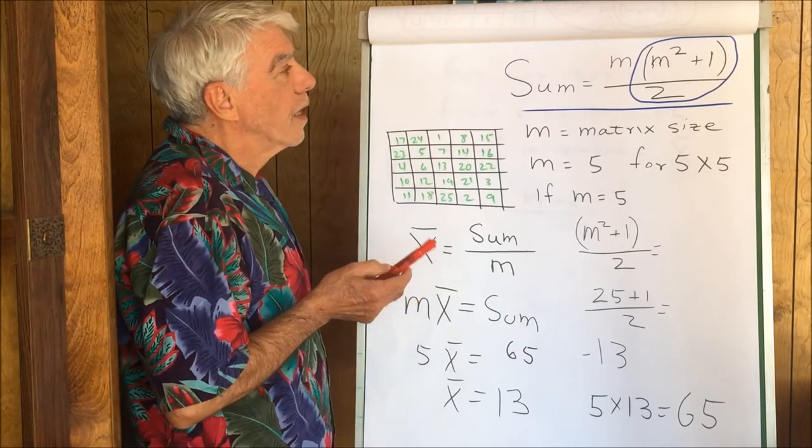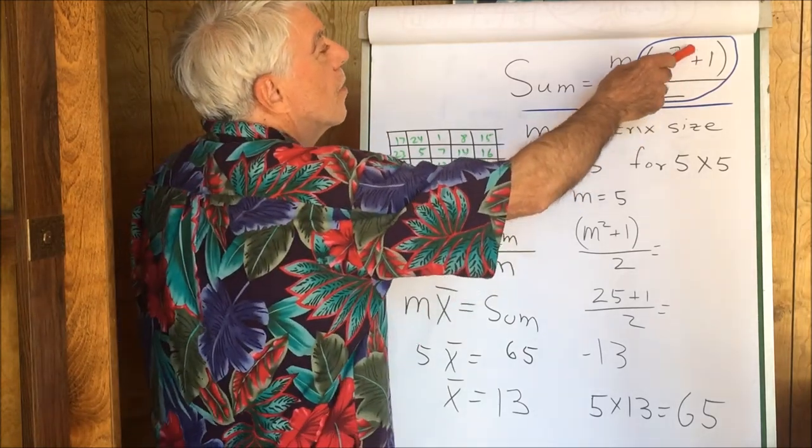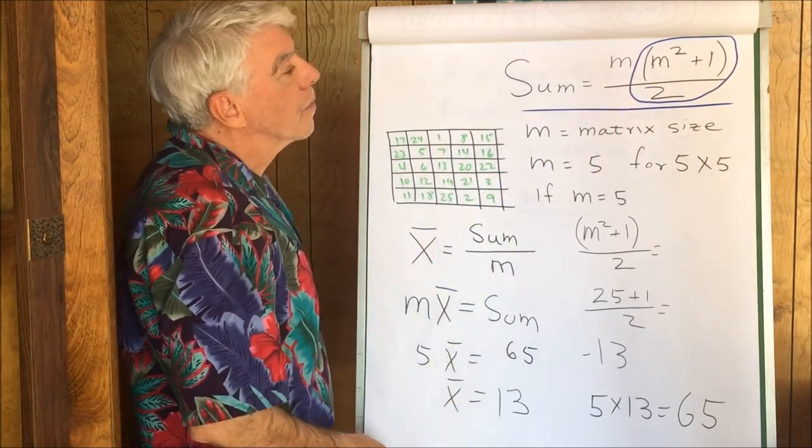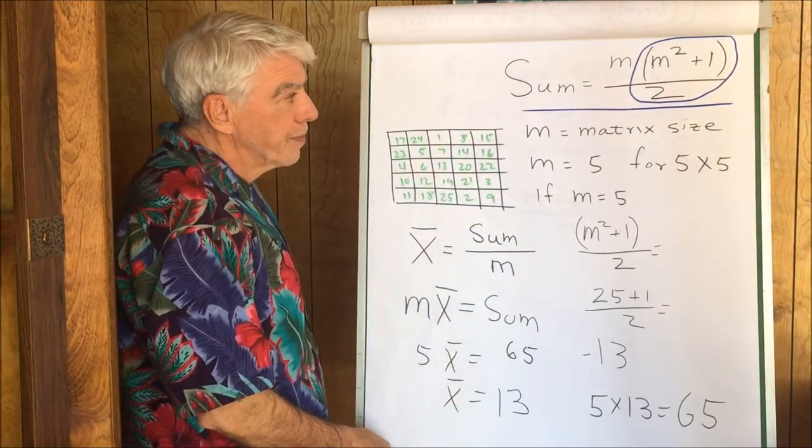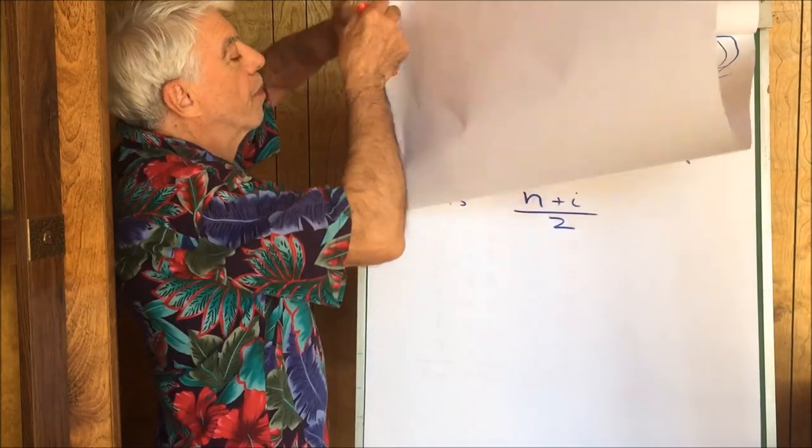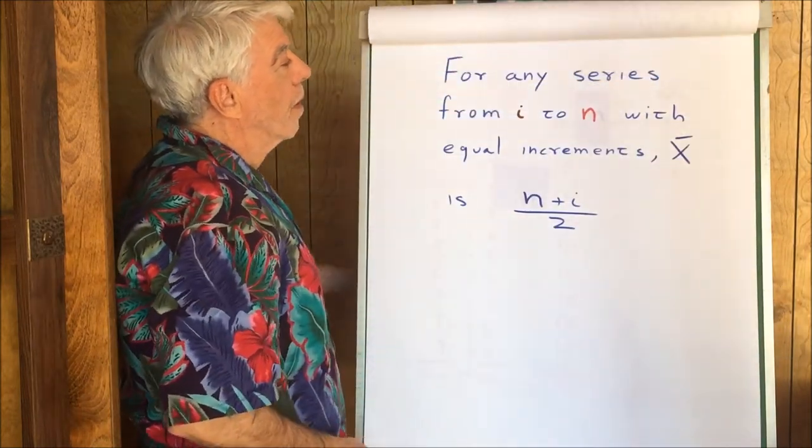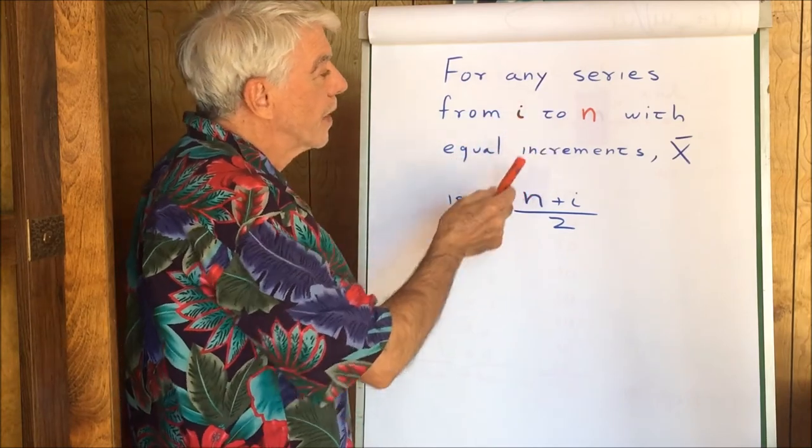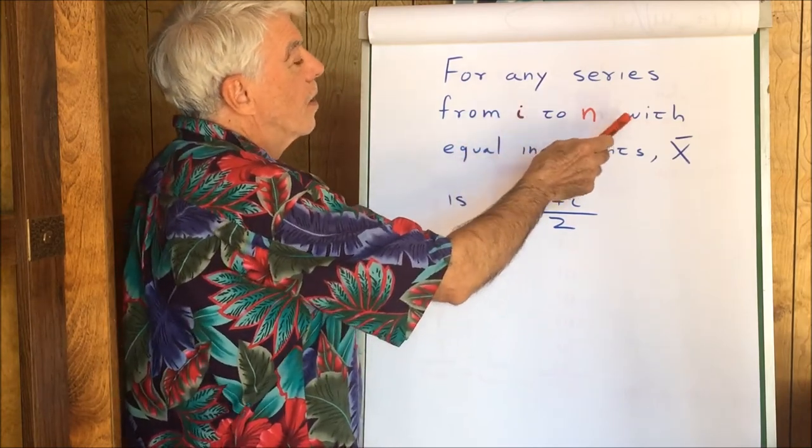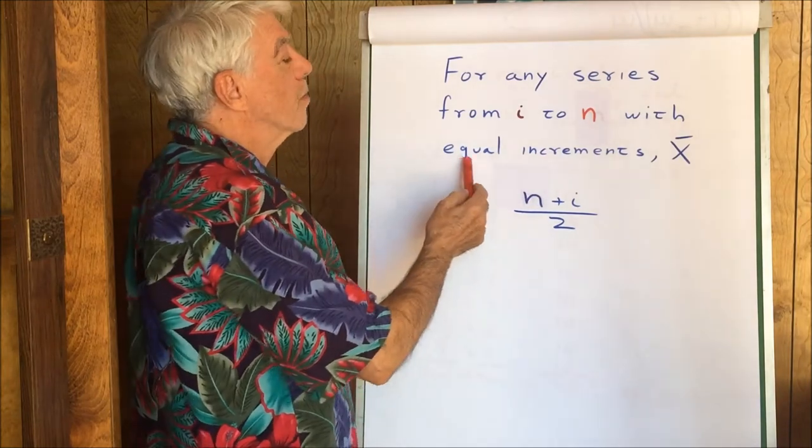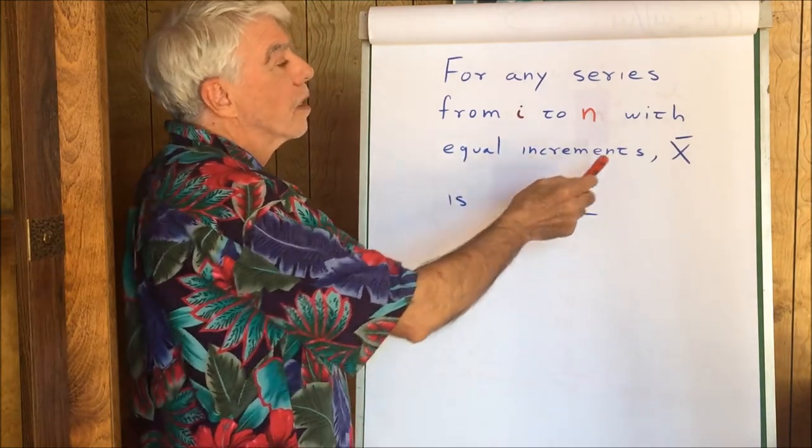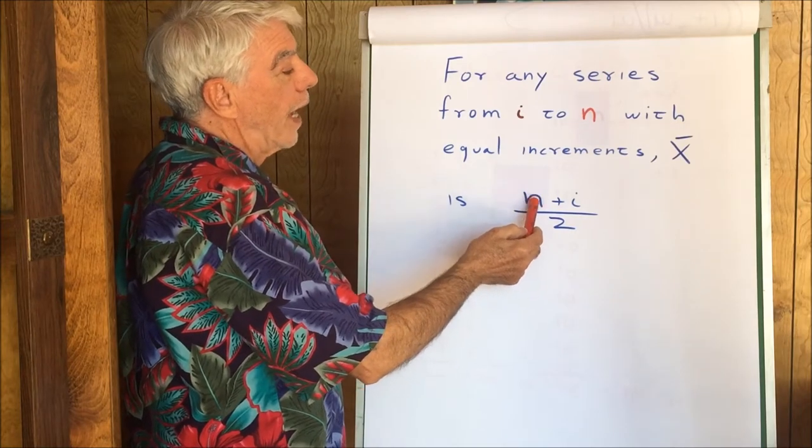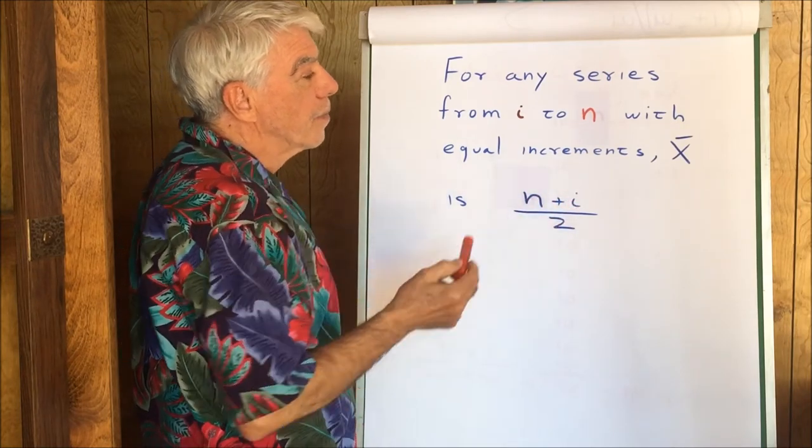So what's left then is to figure out why this term gives us the average. For any series from I to N, beginning with I and ending with N, with equal increments, it's very important, equal increments, X bar is the N plus the beginning divided by 2.